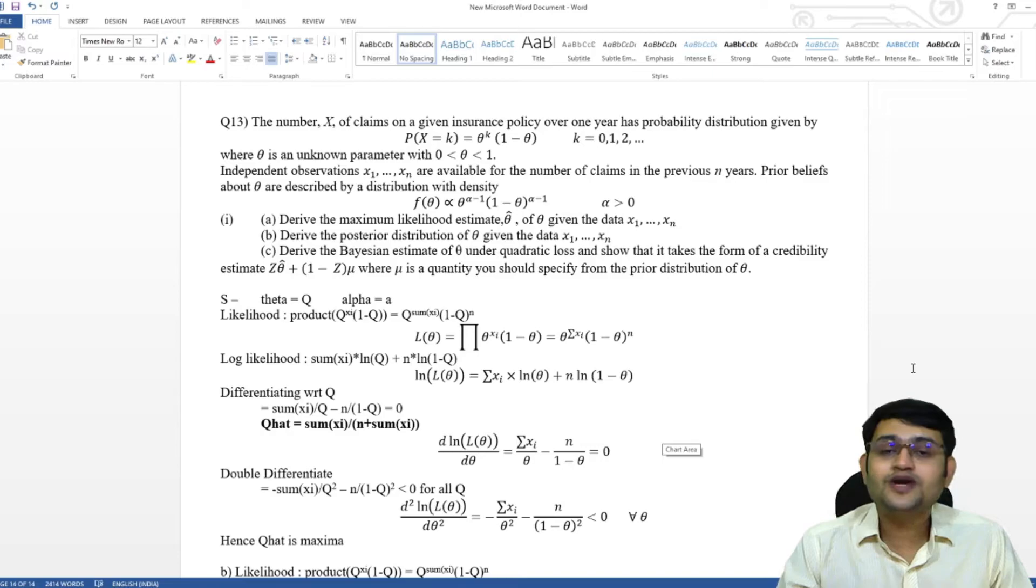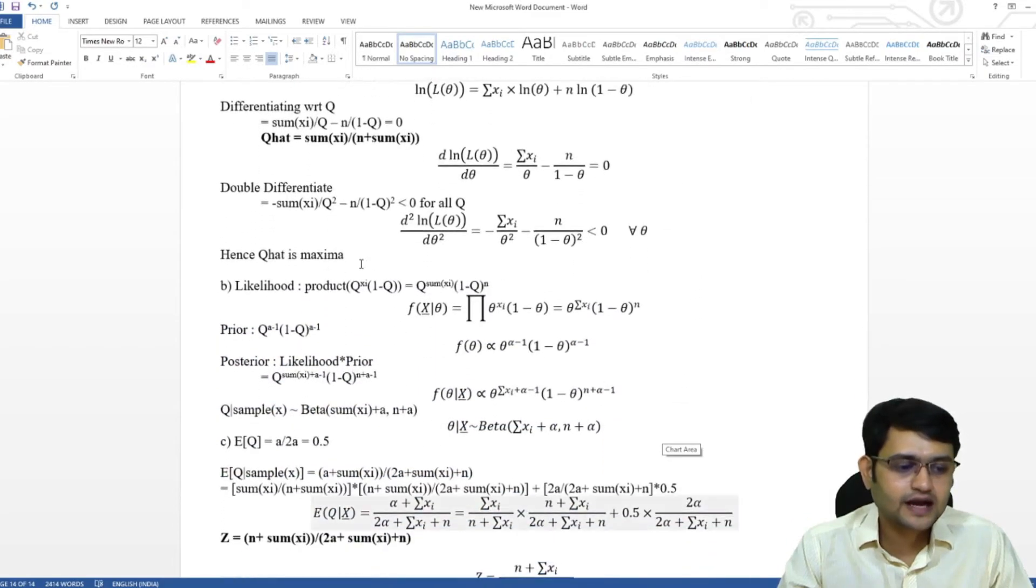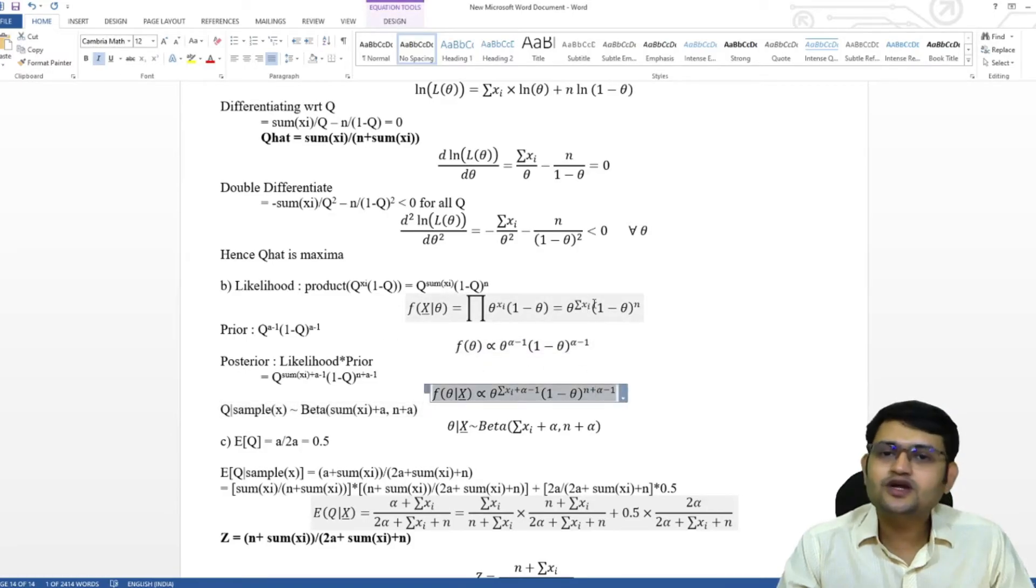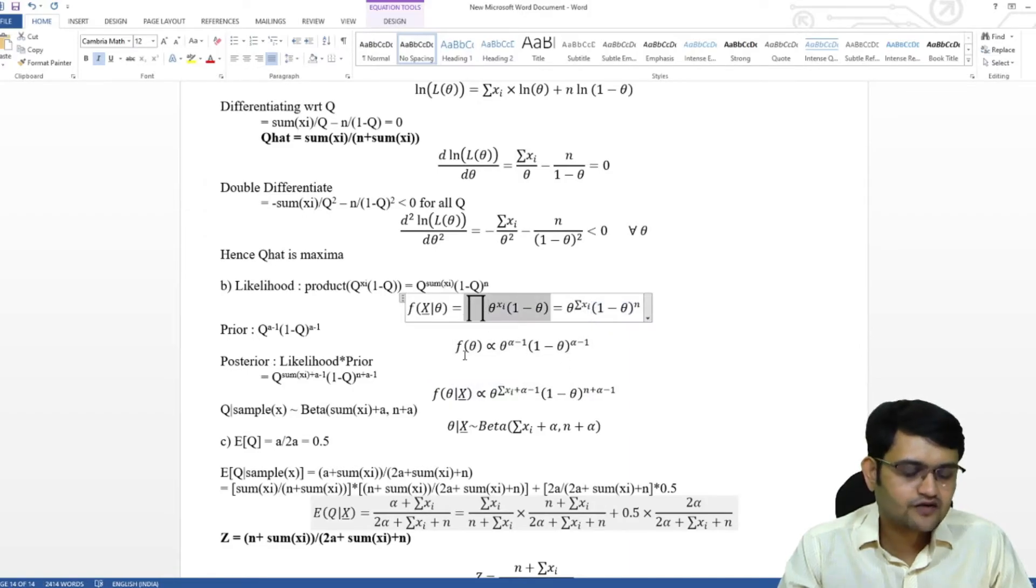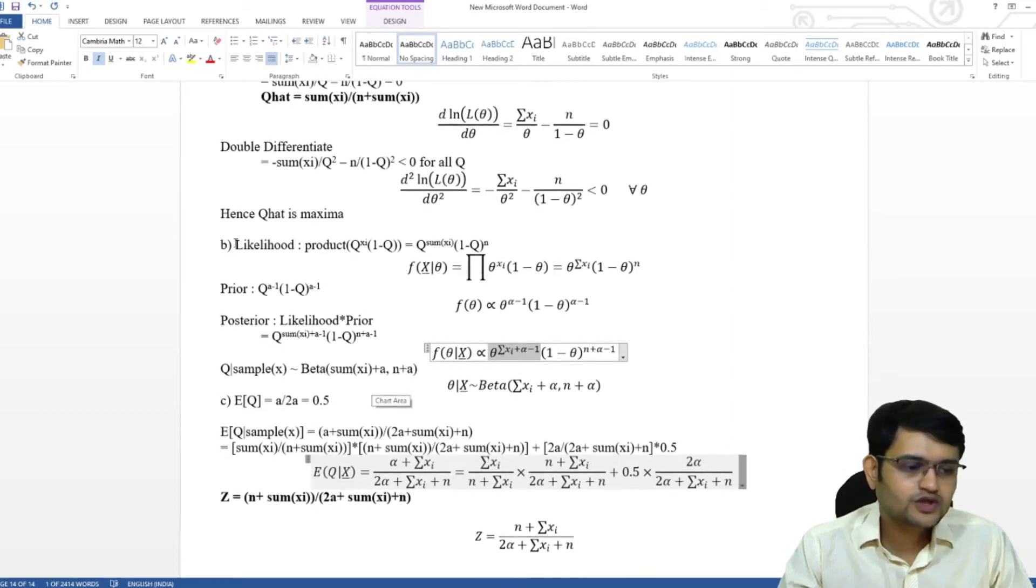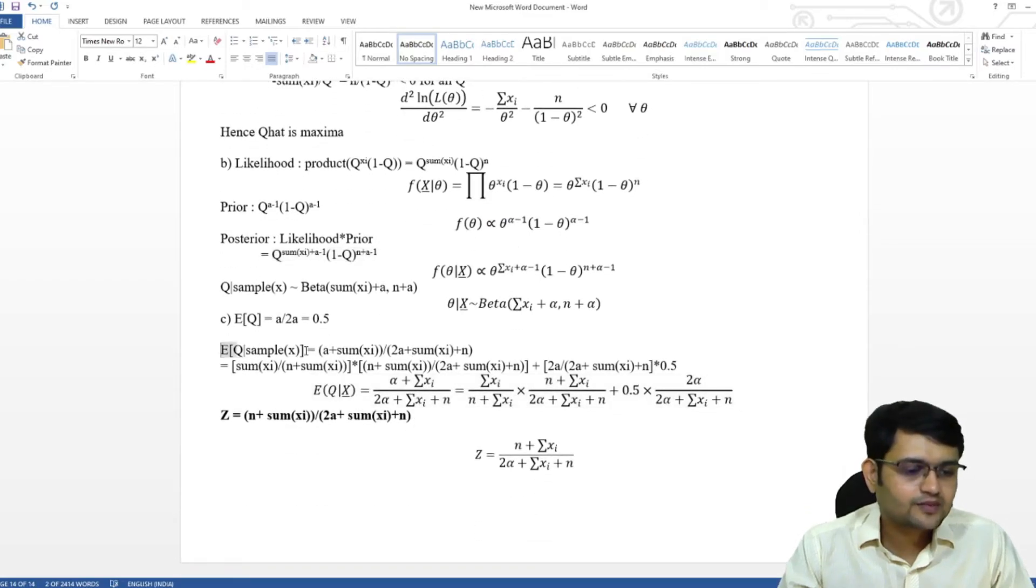For a question of Bayesian statistic and credibility theory, we require a lot of equations whenever we want to make our likelihood prior and posterior distributions. So it's better if you use equation editor, especially when we have product, we have sum. Or you can use without equation editor also. You can see here, it's not very different. It's almost the same. Writing credibility form, credibility factor form would also be easier if we write it using equation editor. Just visually it is better if we use equation editor.